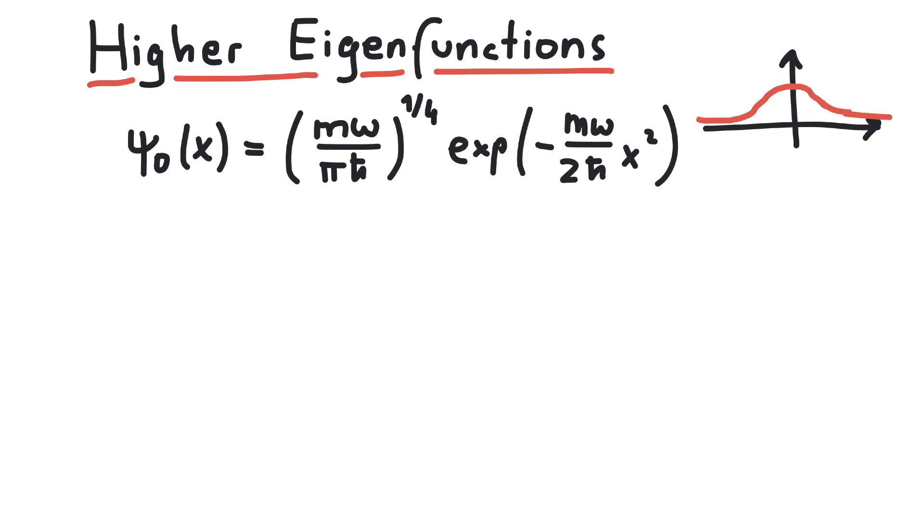So what about higher eigenfunctions, for example, ψ₁(x)? If we want to calculate this first excited state in position space, we could do similar steps to last time.